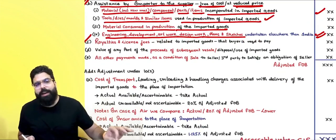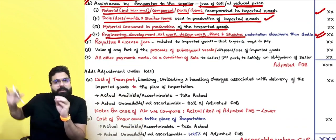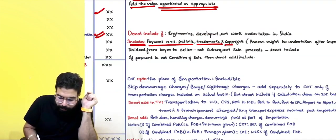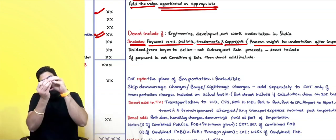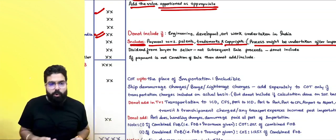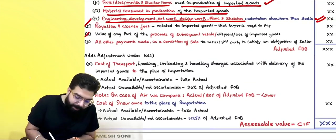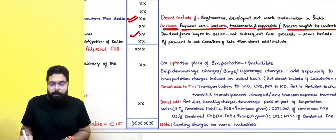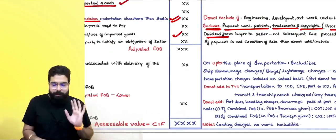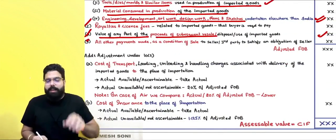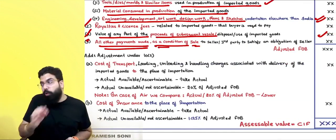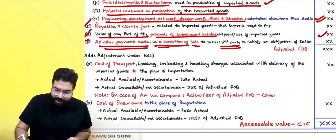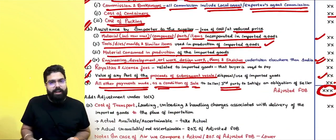Rule 10(1)(c): royalties and license fees relating to the imported goods that the buyer is required to pay to the seller must be included — including payments relating to patents, trademarks, copyright, or processes undertaken after import, since you are paying them with respect to the imported goods. Rule 10(1)(d): value of any part of subsequent resale proceeds must be added. Note: dividends are never subsequent sale proceeds and shall not be included.